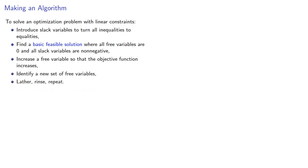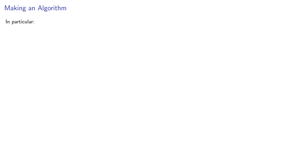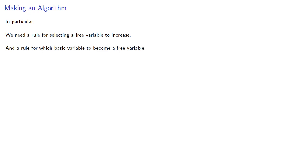The key to turning this into an algorithm — and an algorithm has decisions but no choices — is that we need a rule for selecting a free variable to increase, and a rule for which basic variable becomes a free variable. It also helps if our algorithm presents things in a form that's easy to work with.